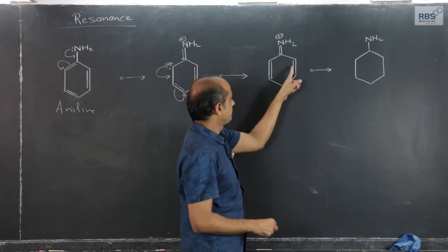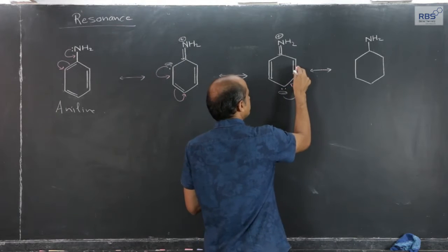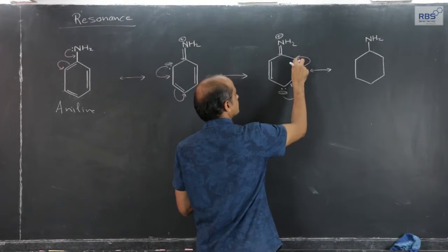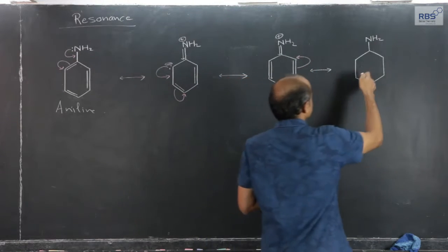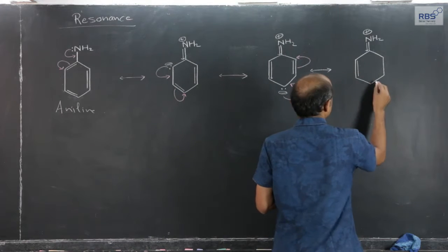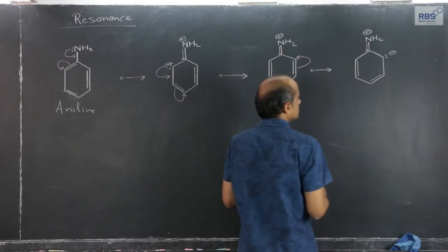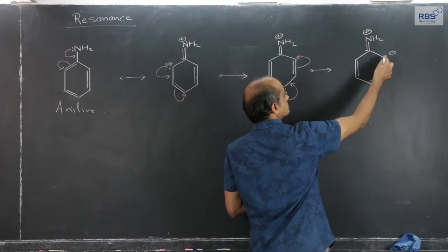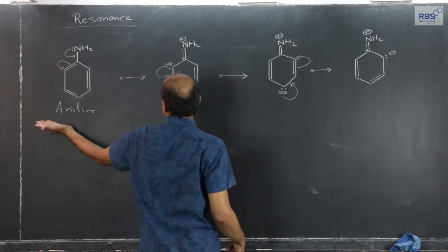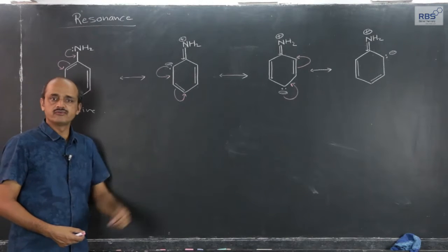Again, in this form, lone pair, sigma, pi conjugation. The moment this lone pair becomes a shared pair, this weakly shared pi shared pair becomes a lone pair and gets transmitted to the next carbon, which can be shown in another resonating form. These are the various resonating forms of aniline.